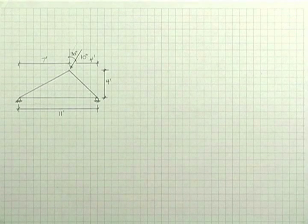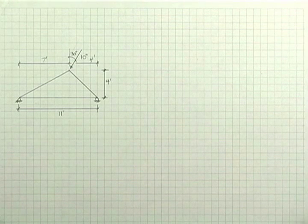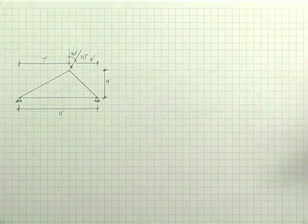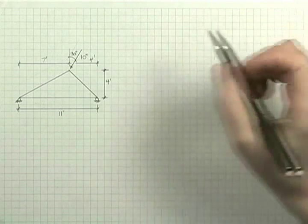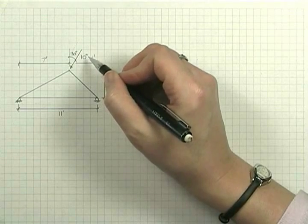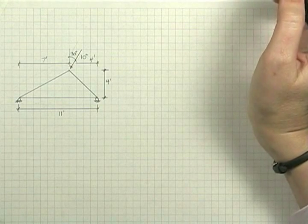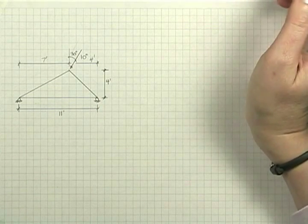In this example, we're going to analyze the same truss that we did previously with the inclined 10 kip load. However, we're going to compute the reactions in a different manner. Instead of doing this with mathematics by breaking the 10 kip load into horizontal and vertical components, we're going to analyze it by graphics.